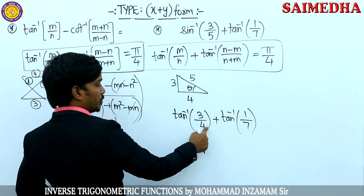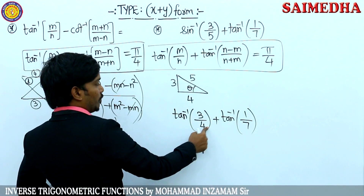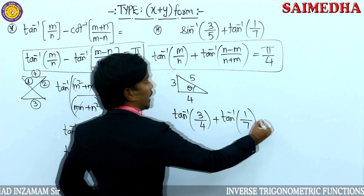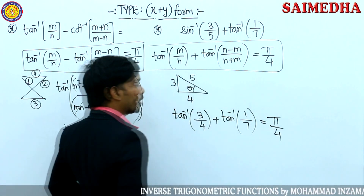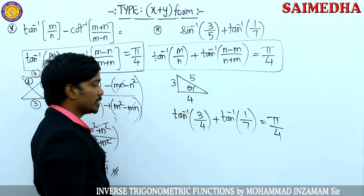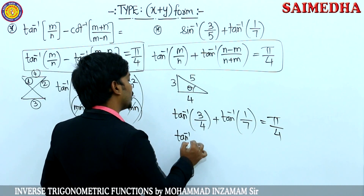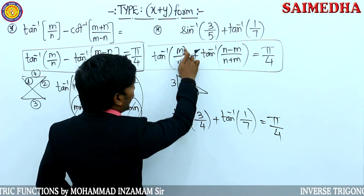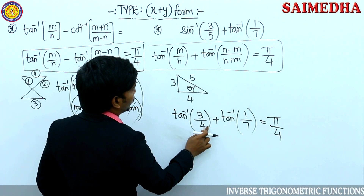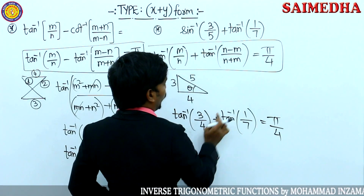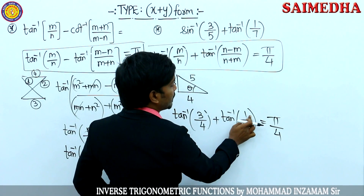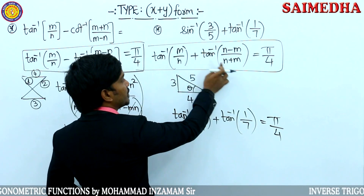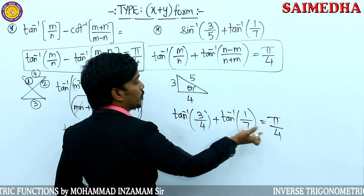Here m and n values: m is 3, n is 4. So n minus m = 4 minus 3 = 1, and n plus m = 4 plus 3 = 7. The answer is not 5 by 4. Now it is in the form of tan inverse of m by n, which is 3 by 4, and n minus m over n plus m = 1 over 7.